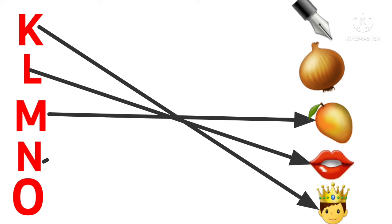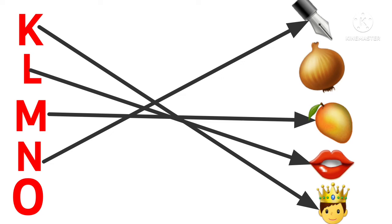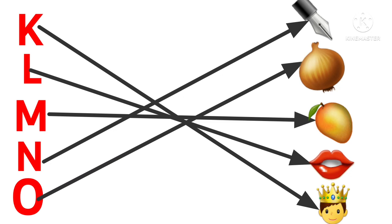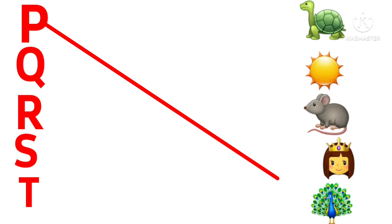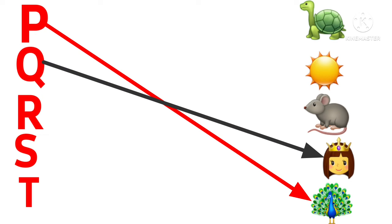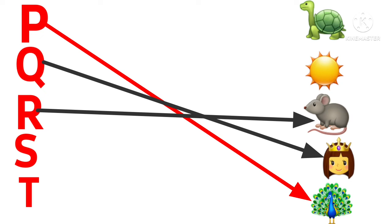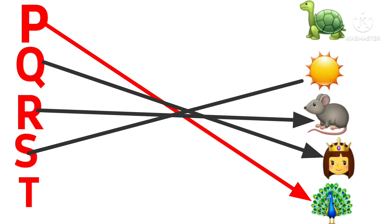M: Mango. N: Nib. O: Onion. P: Peacock. Q: Queen. R: Red. S: Sun.